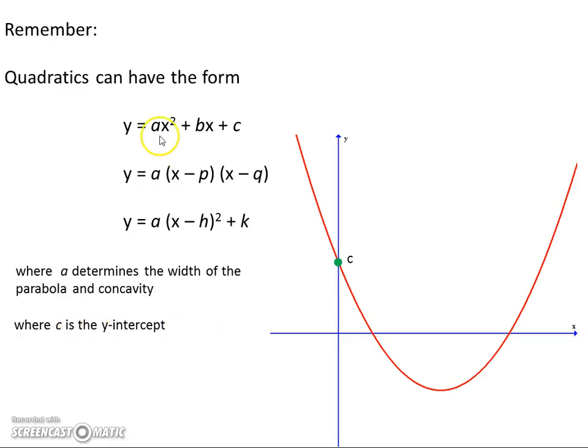C is the y-intercept because if you put x equals 0 here you'll be left with y equals c.